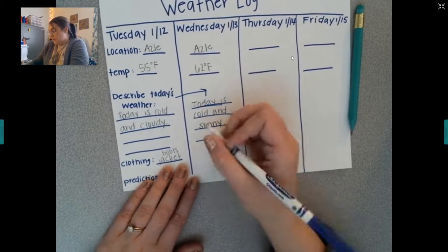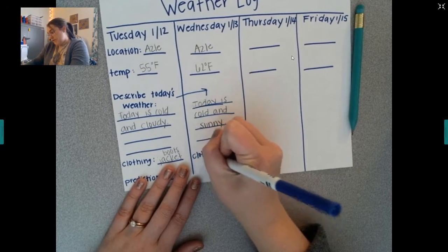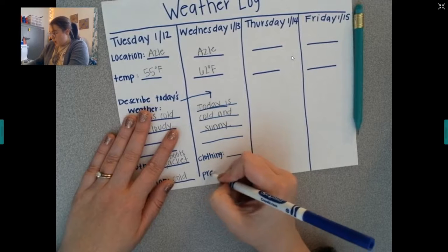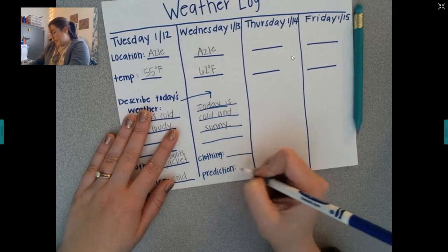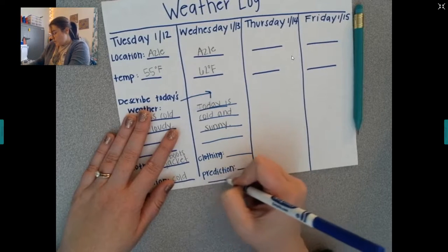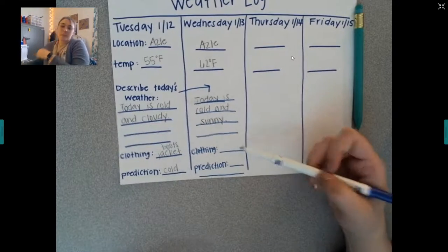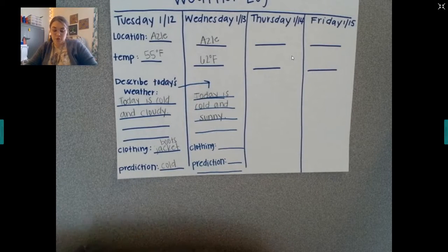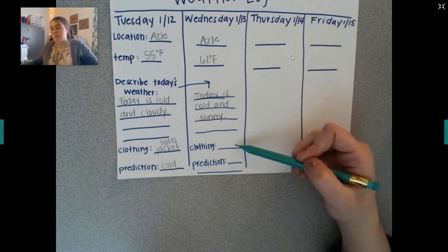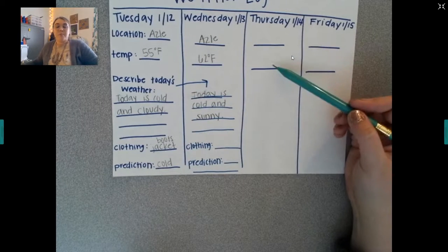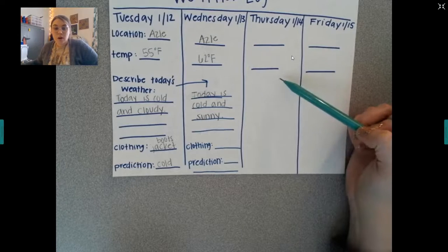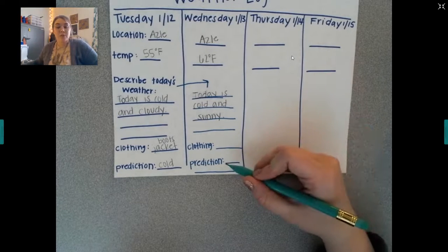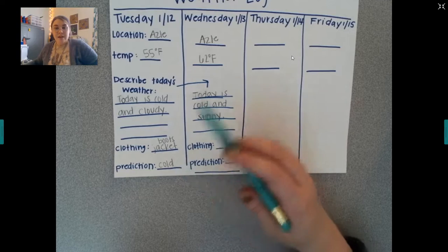Then down here we're going to do the same thing — you don't have to rewrite these words. This is the part that is your independent work. I want you to write what kind of clothing you should wear today. Should you wear a jacket? Should you wear shorts? Based on the weather, what kind of clothing would you wear? And then I want you to make a prediction of how the weather is going to be tomorrow — warmer, colder, sunny, cloudy, rainy, snowy? Write your prediction just like we did on Tuesday, but for Thursday.